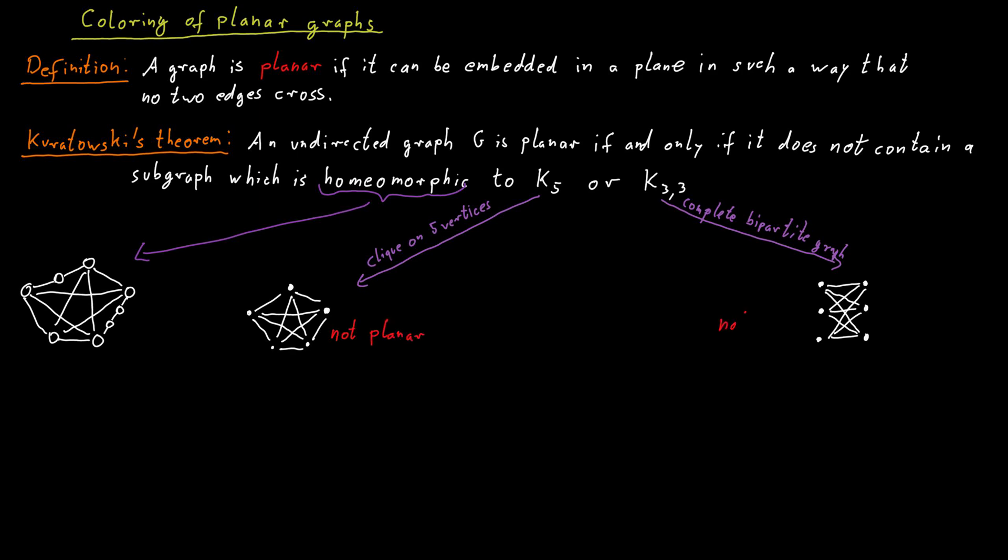The graphs K5 and K33 are not planar. And what this theorem says is that in some sense they are the main non-planar structures you will find. So if a graph has one of those two structures, the graph will of course be not planar because that part of the graph alone is already not planar.